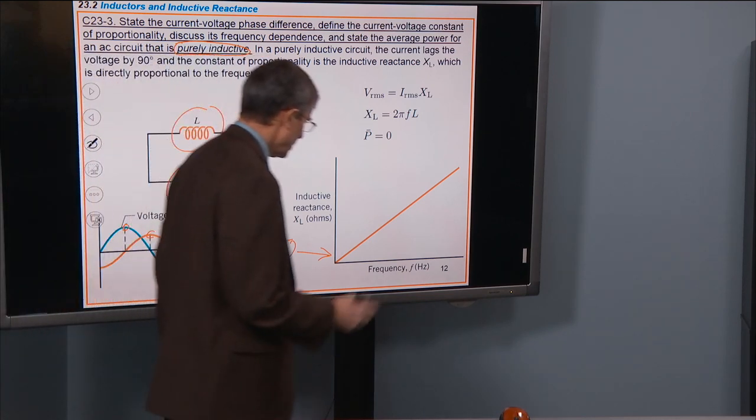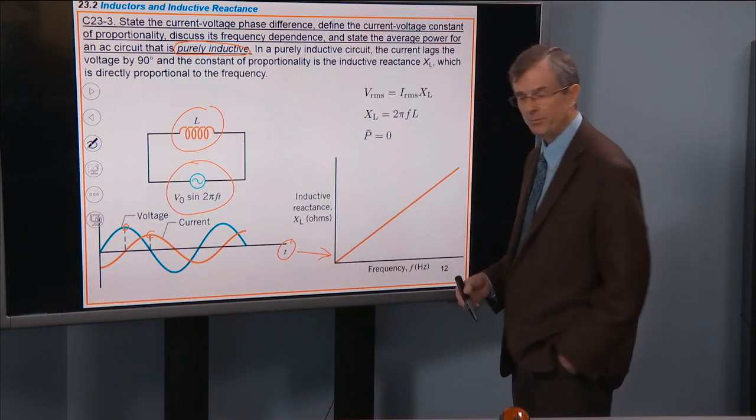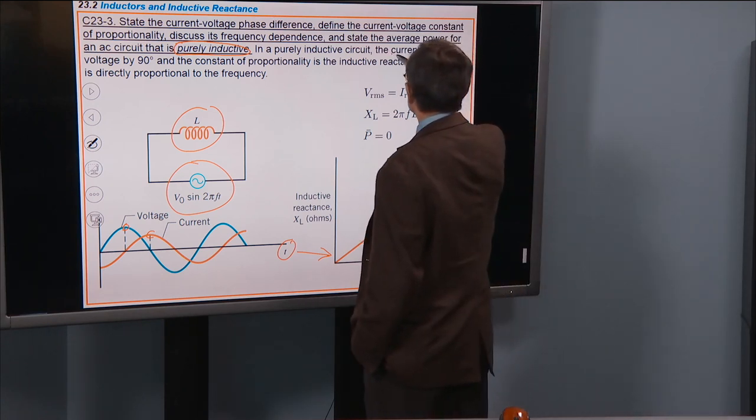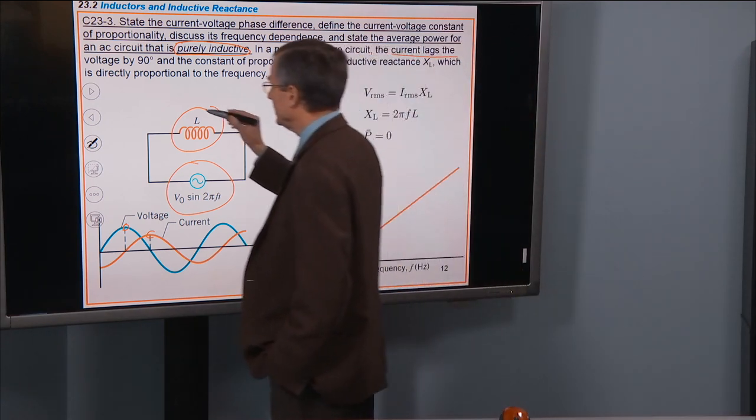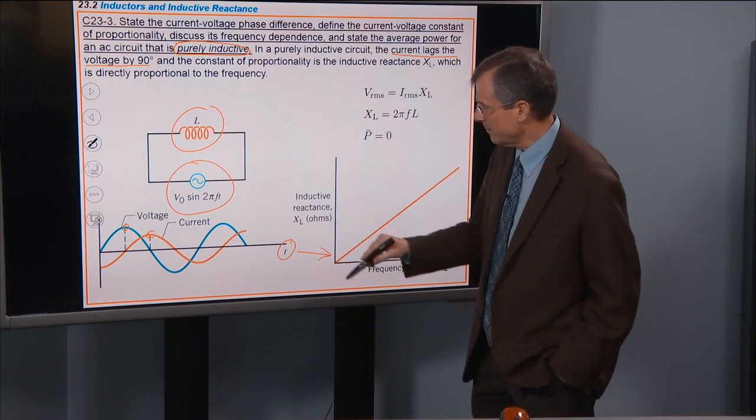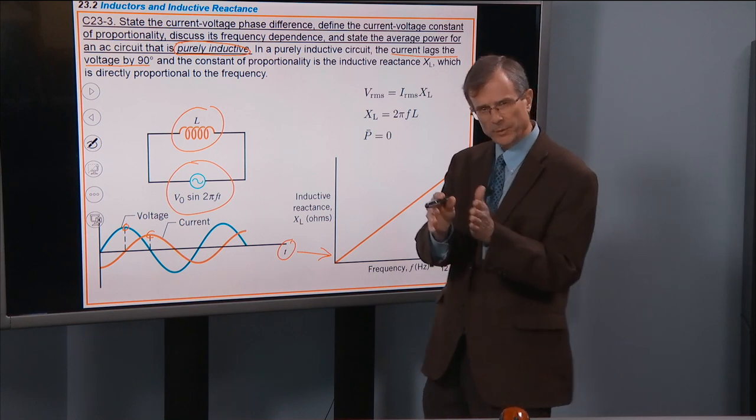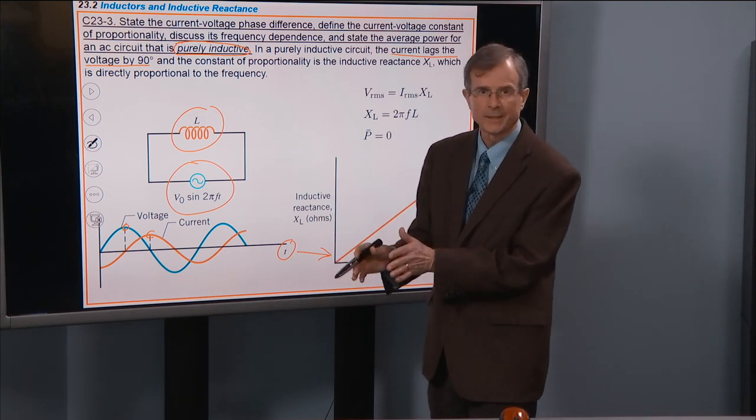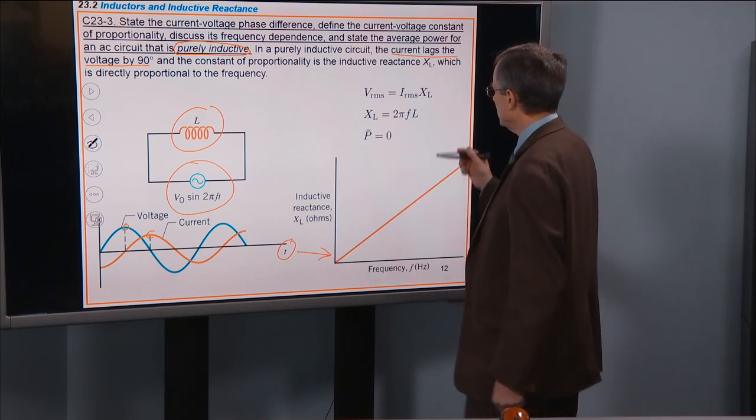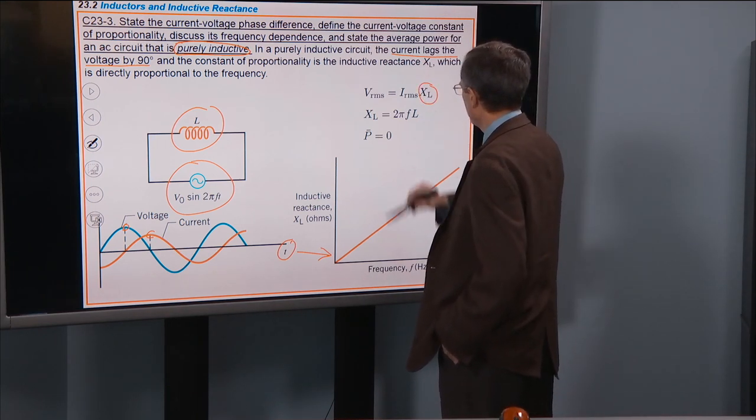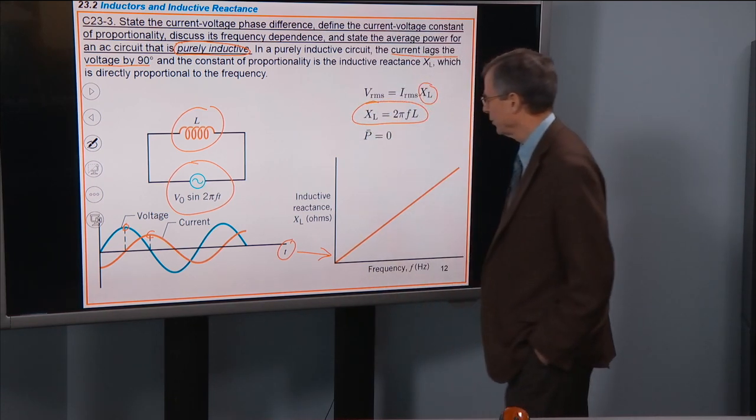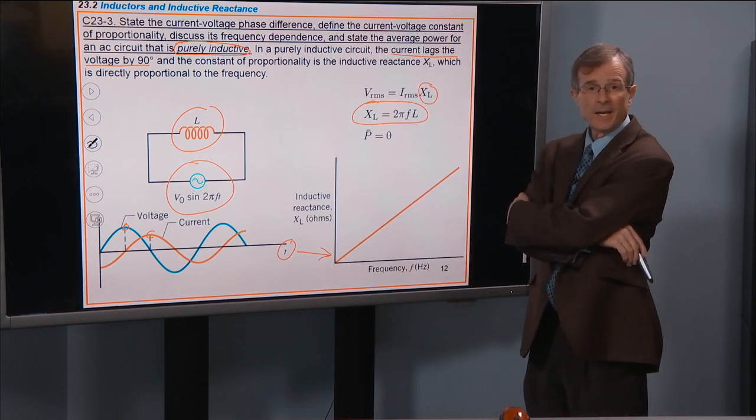So in this case, instead of the current leading the voltage, the opposite is true. The current lags behind the voltage by 90 degrees, that same amount, because they're both offset by one quarter of a cycle. And the constant of proportionality is called the inductive reactance. Here's its form: 2πfL.